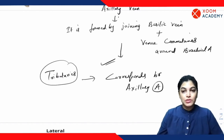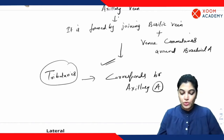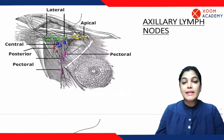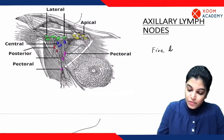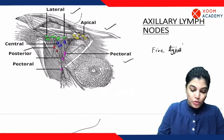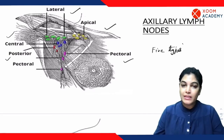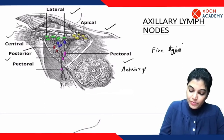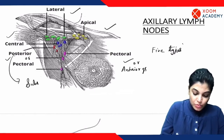It is important to know the tributaries of the axillary vein in order to understand the location of the important axillary lymph nodes. The axillary lymph node is categorized into five types: lateral, apical, pectoral, posterior, and central. The pectoral group is also called the anterior group, and the posterior group is also called the subscapular group of axillary lymph nodes.